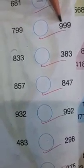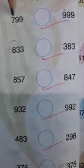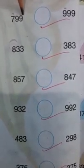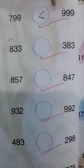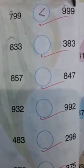Now 799 and 999. In the 100s place we have 700 and 900. Since 700 is less than 900, 799 is less than 999.